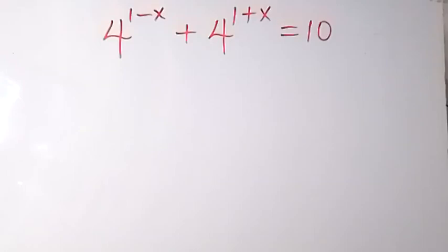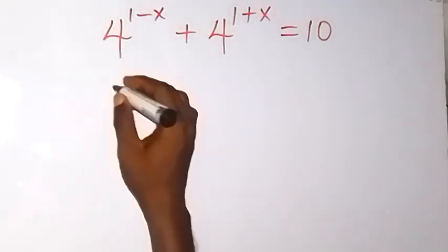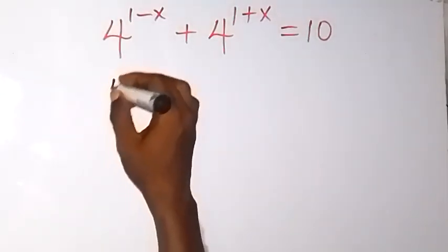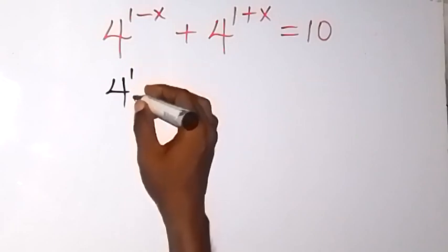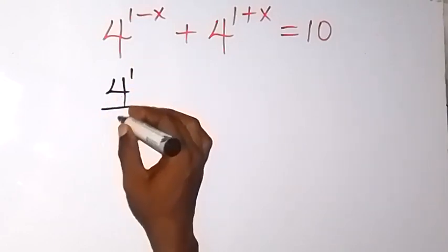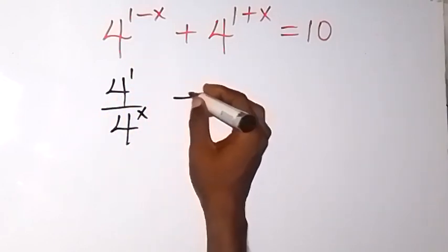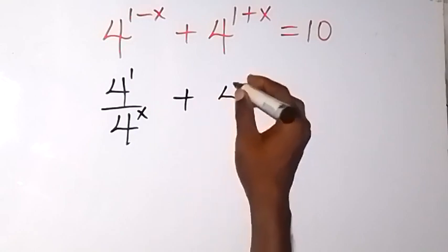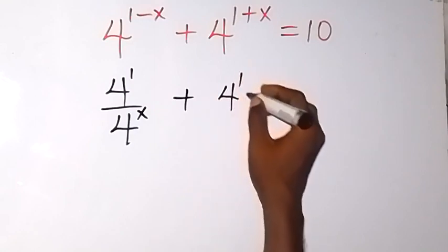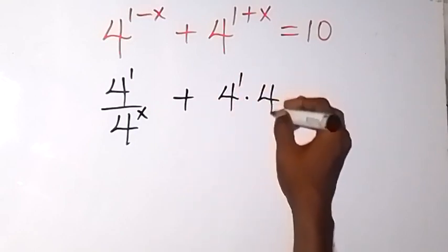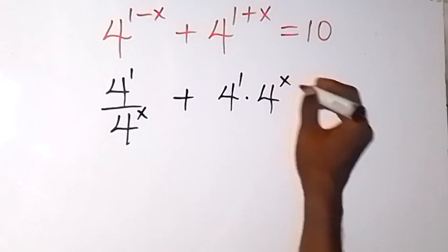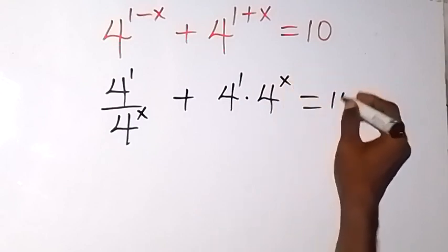Thank you for joining us. Let's solve this problem. We can write this one as 4 raised to power 1 divided by 4 raised to power x, plus 4 raised to power 1 times 4 raised to power x, equals 10.